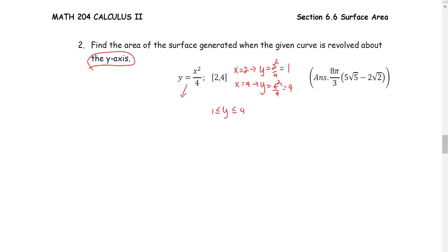We solve for x to get x equals plus or minus the square root of 4y. But since y is between 1 and 4, we just look at x equals square root of 4y, which is 2 times square root y.